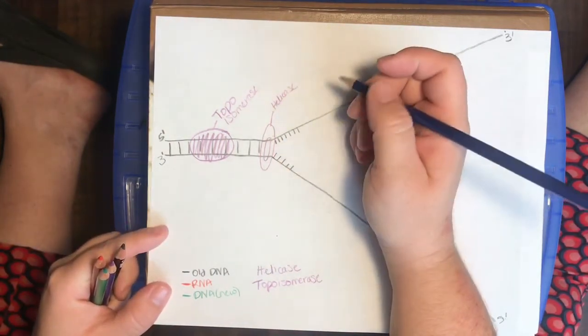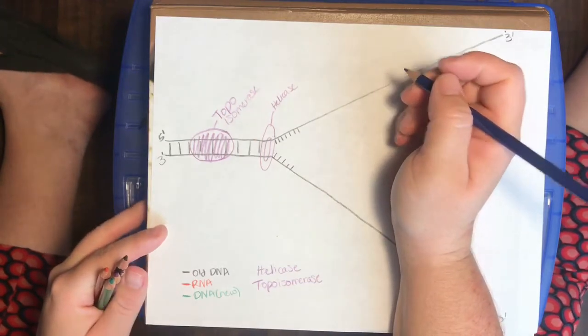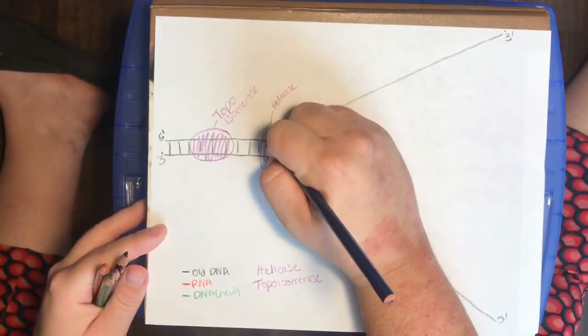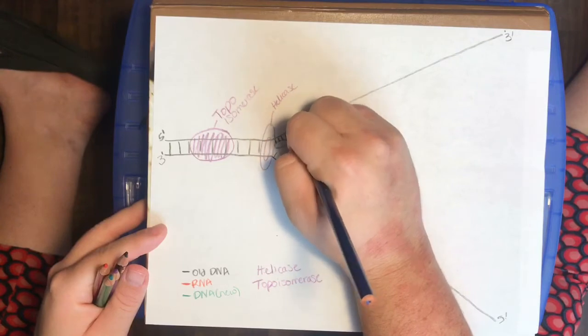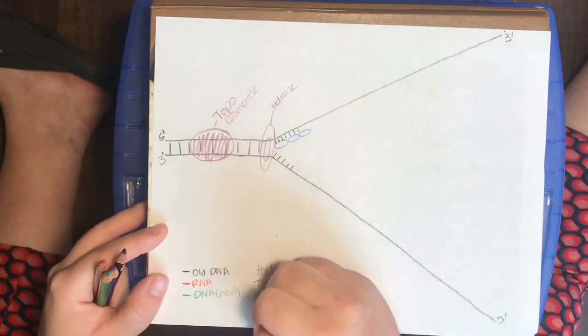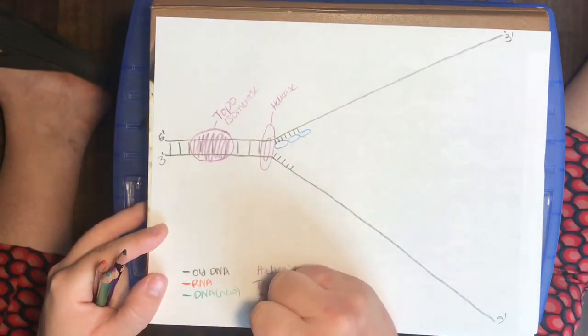So blue is going to be just structural elements or proteins that are involved. And we're going to build these things that are called single-stranded binding proteins. I'm going to label them as SSBs.